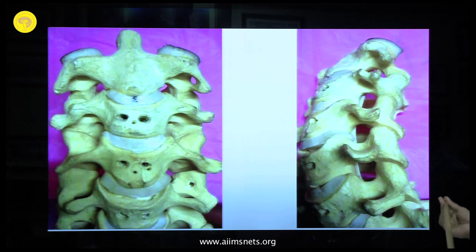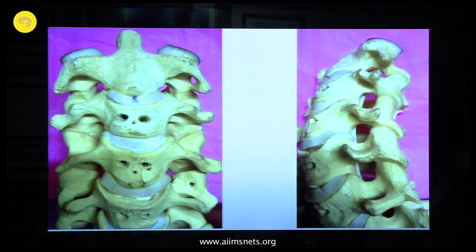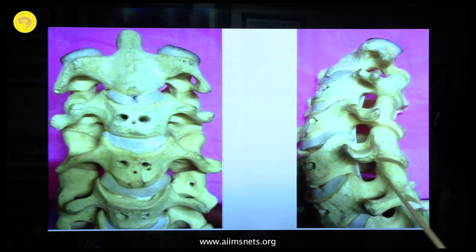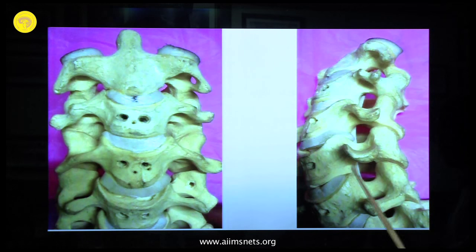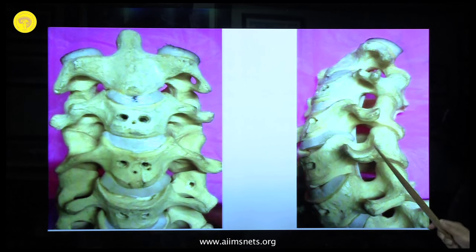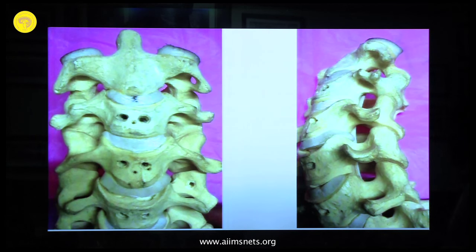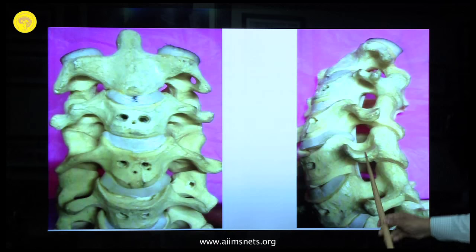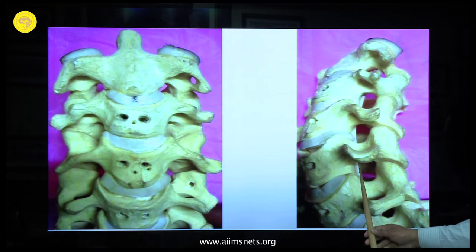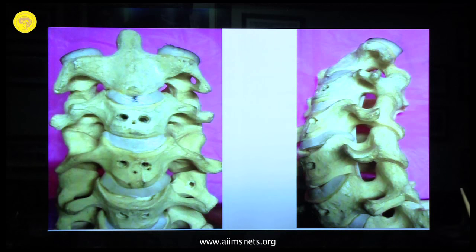Where is the uncovertebral joint? That is another very important thing. Zygapophysial joints are the simple facet joints, but uncovertebral joints are the edges of the vertebral body. Osteophytosis always occurs at this point. In an unstable spine, the spine is trying to become more stable, but the osteophytes either impinge into the intervertebral foramen or impinge backwards and cause cord compression.